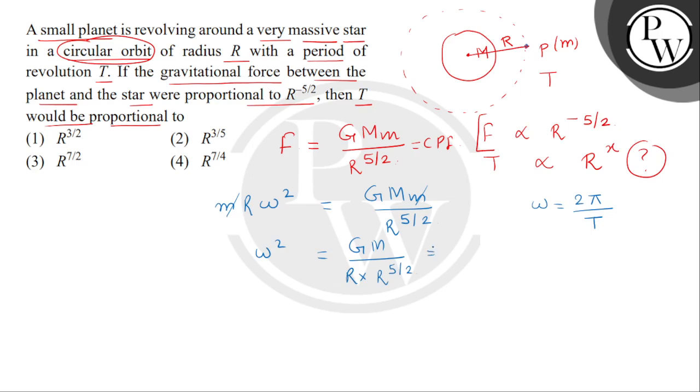So bachiyo, यहां से हमें मिल जाएगा, अगर हम omega को put करते हैं, 2 pi by T. Square करने से 4 pi square divided by T square is equals to GM divided by r to the power 7 by 2. अब बच्चों, यहां 4 pi square G and M, यह चारों constants हैं.